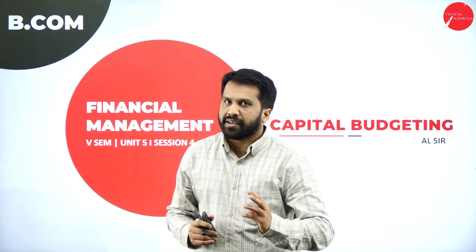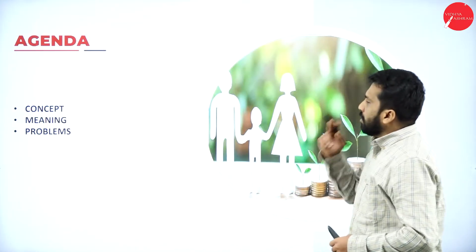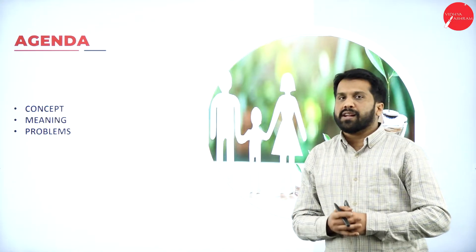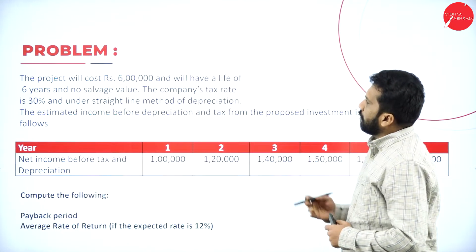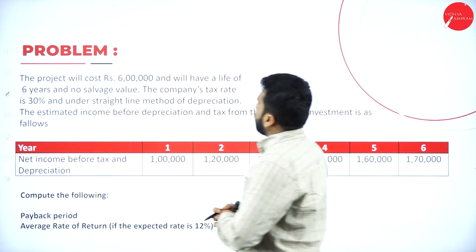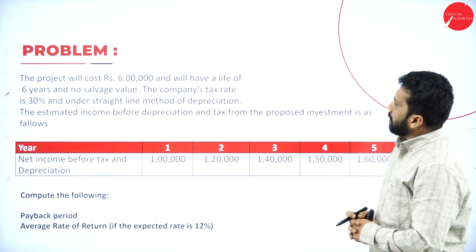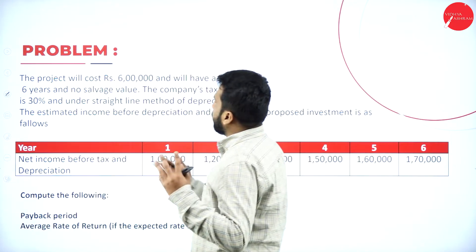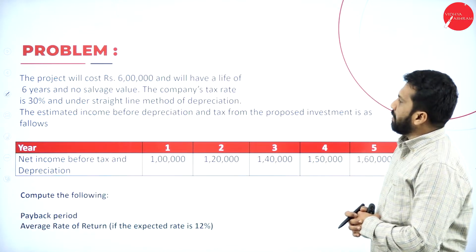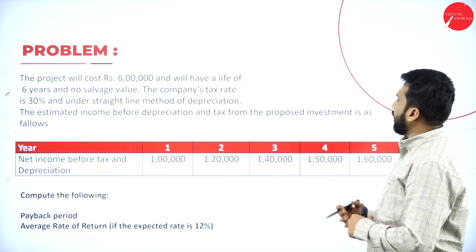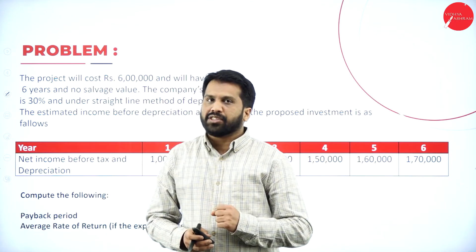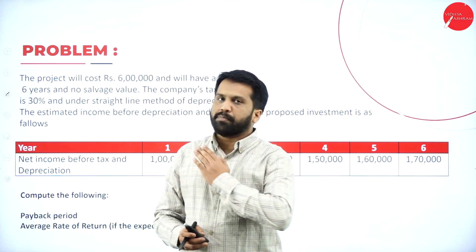We'll go with the agenda — the concept, meaning, and a problem. The project will cost rupees six lakh, will have a life of six years, no salvage value. The company's tax rate is 30 percent. Under the straight line method of depreciation, the estimated income is given before depreciation and taxation, which means we have to go from the beginning.